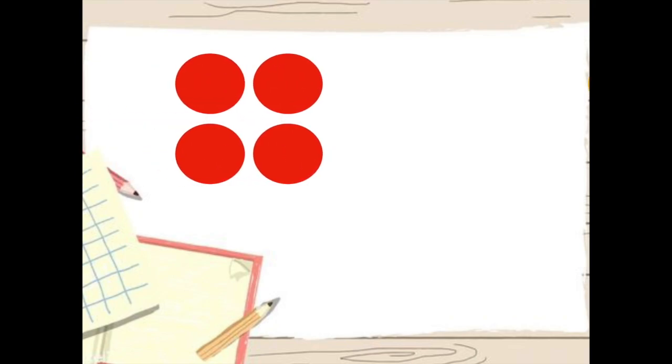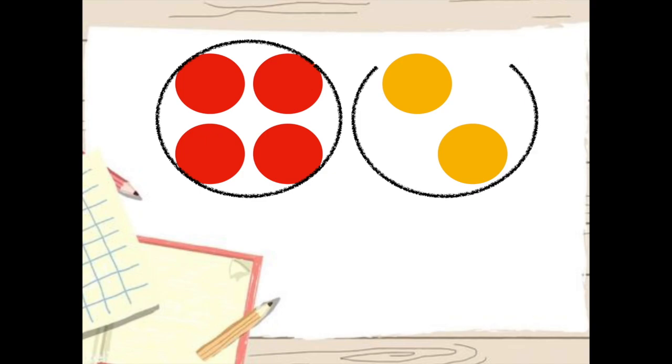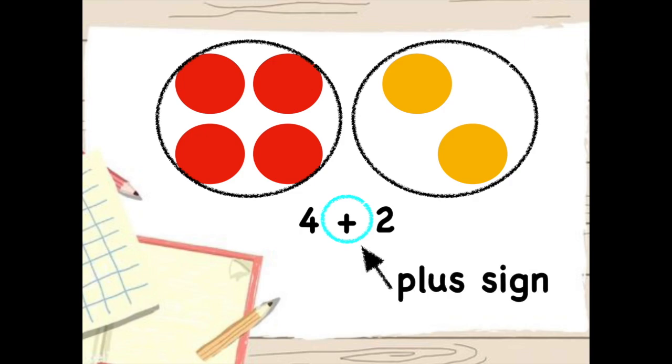Here's our first problem. I have four red counters and two yellow counters. How many counters in all? To solve this problem, I need to start by identifying how many counters are in each group. I have a group of four red and I have a group of two yellow. I can represent this by writing four plus two. This symbol right here is called the plus sign. The plus sign is the symbol you use to show that you are joining two groups together.